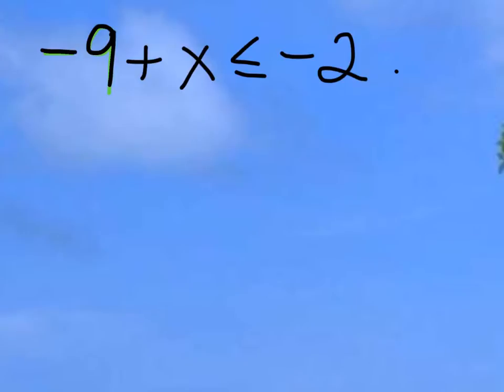Let's say we're given the inequality: negative 9 plus x is less than or equal to negative 2. Now, as you may have noticed in the previous video, solving an inequality is nearly identical to solving an equation. Our goal is to get the variable by itself. We've got our variable x here, and our equation is split where the inequality is — this is our left side, and this is our right side. So our endgame is to get x on its own, which means we need to get rid of this negative 9.